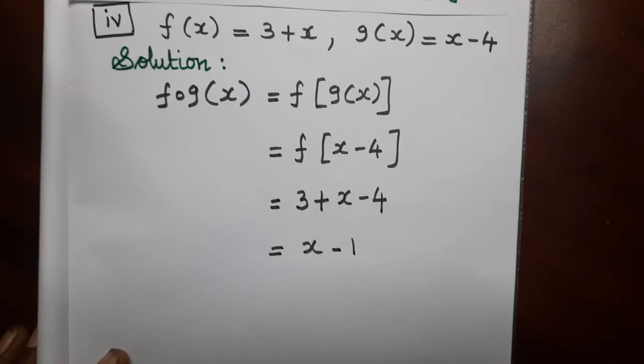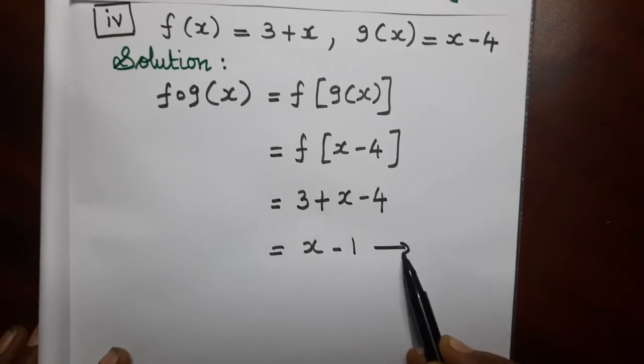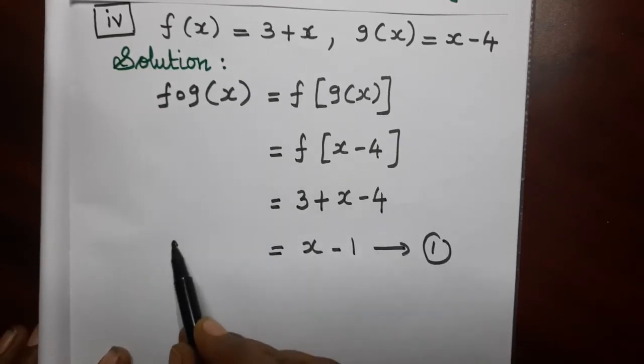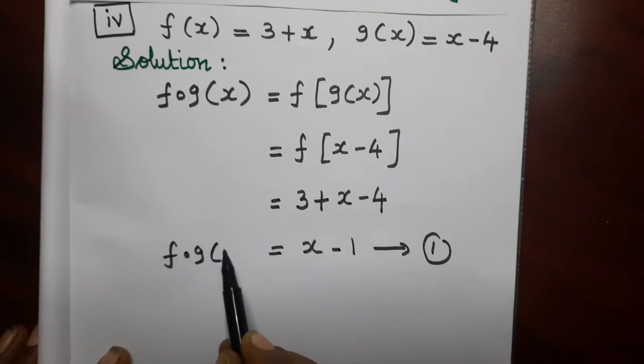This we write as equation number 1. On the left side, f dot g of x.